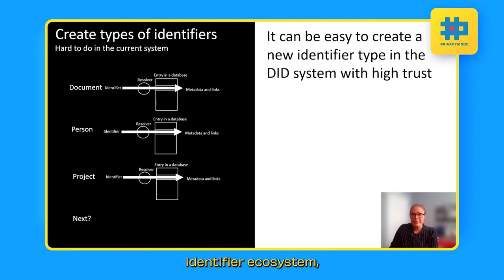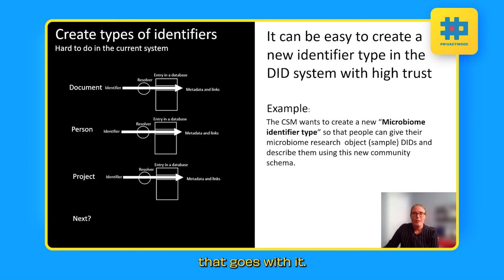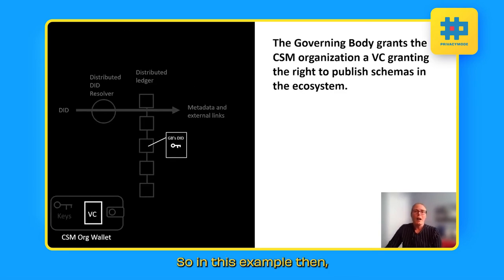So with the decentralized identifier ecosystem, it can be very easy to create a new identifier type in the system and to have the high amount of trust that goes with it. So in another example of a use case, I am the Canadian Society of Microbiologists and my membership has identified a need. We want to create a new microbiome identifier type so that people can give their microbiome research objects like a sample, a decentralized identifier and they can describe it using this new community schema. So in this example, here's a different variation of governance. So perhaps the governing body grants the CSM an organization credential that grants them the right to publish schemas in the ecosystem. So maybe in this kind of governance model, we say that schemas are only allowed to be registered by specific parties that have been granted that.